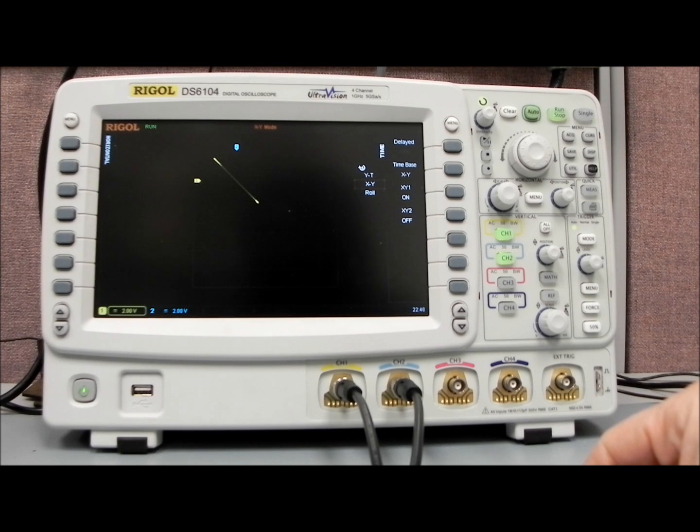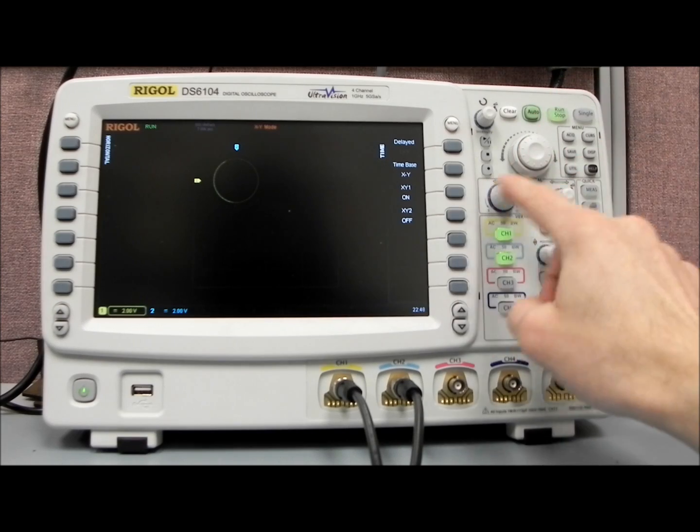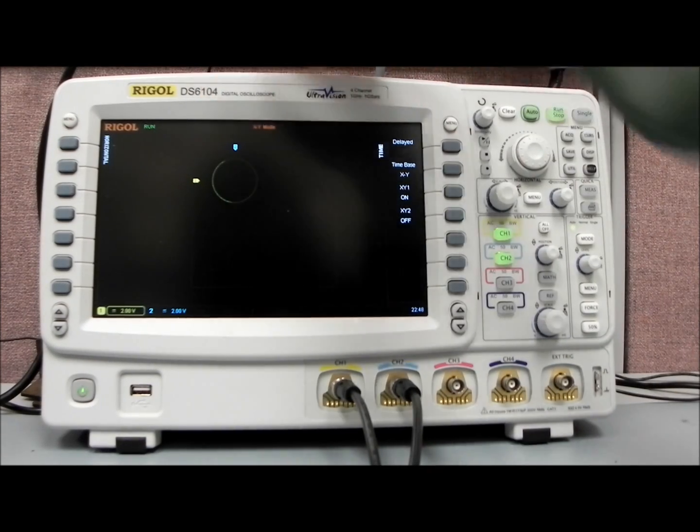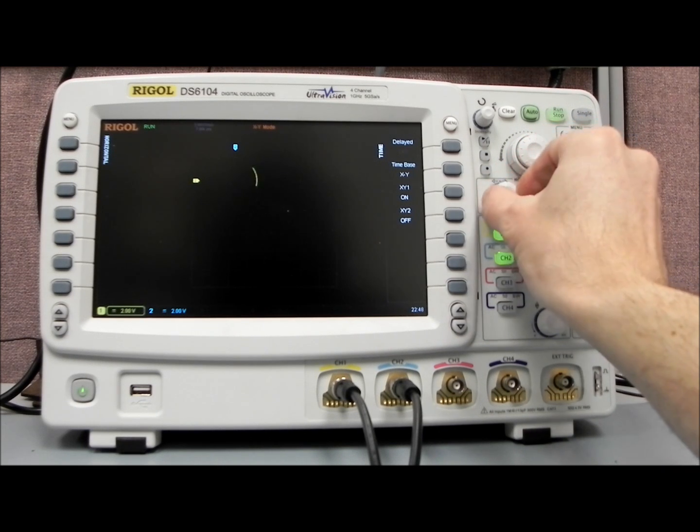Again, these are 180 degrees out of phase. If we set them to zero degrees out of phase, you'll see that it flips the line. If we set them to 90 degrees out of phase, that will become a circle and we may need to adjust the sample rate. The horizontal is going to adjust our sample rate. We have 500 mega samples per second. So we can actually change that.